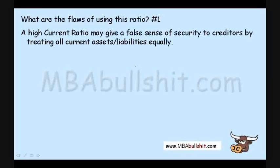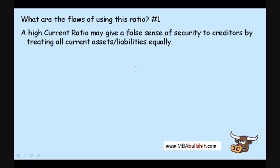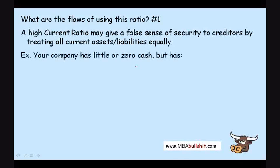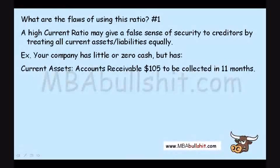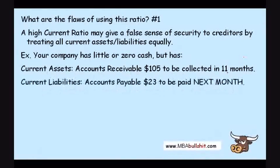Flaw number one: a high current ratio may give a false sense of security to creditors by treating all current assets and current liabilities equally. For example, let's say your company has little or zero cash but has current assets in the form of accounts receivable worth $105, which will be collected in the next 11 months — still a current asset since it's less than 12 months.